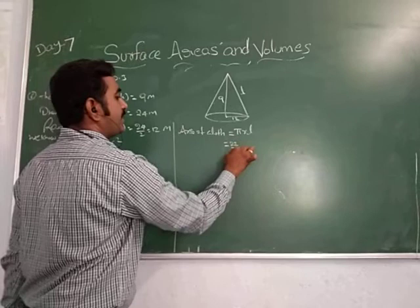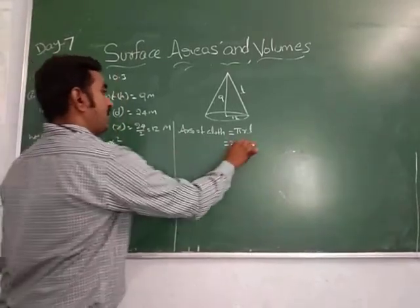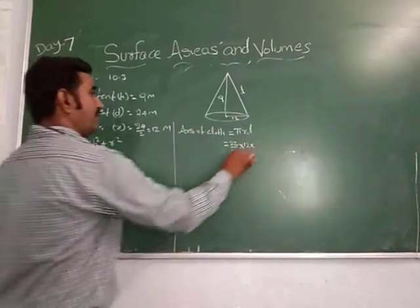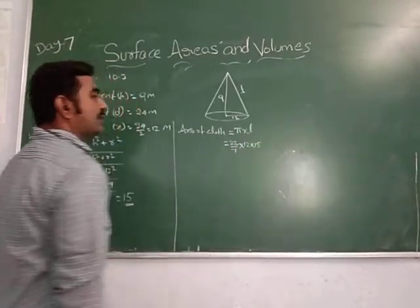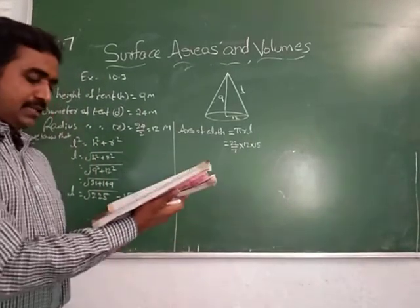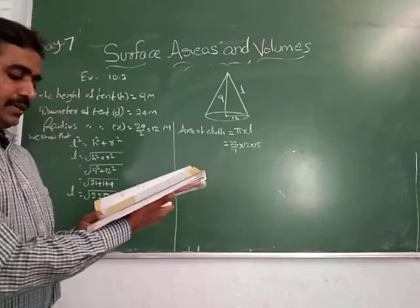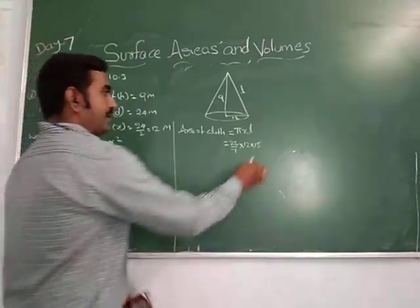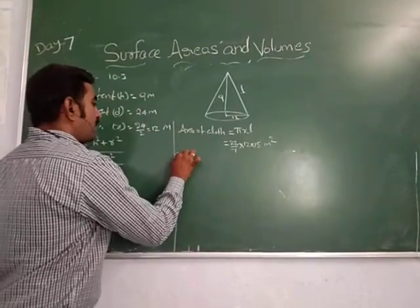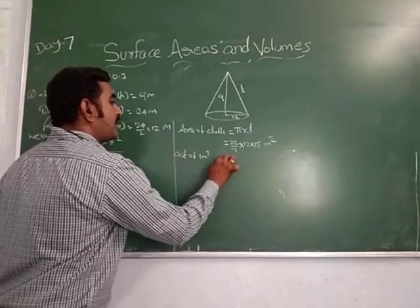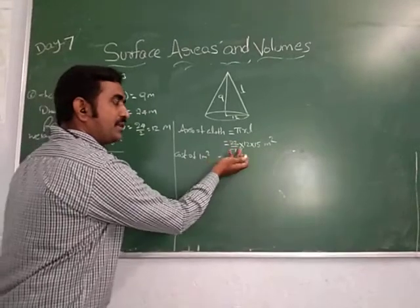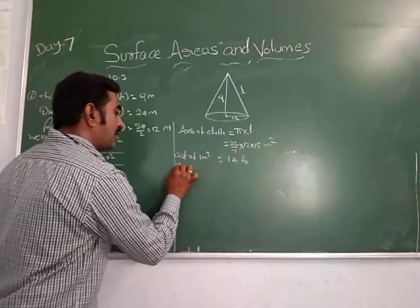Cost of the cloth: 14 rupees per square meter means cost of 1 meter square equals 14 rupees. Then the cost of total canvas equals the area multiplied by 14. So cost equals 22 by 7 into 12 into 15 meters square, multiplied by 14. After cancellation, 7 cancels, giving 22 into 12 into 15 into 2, that is 22 into 12 into 30.